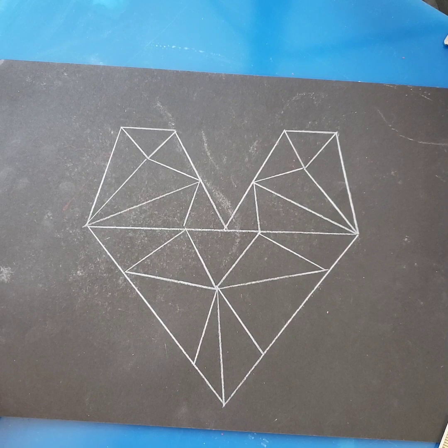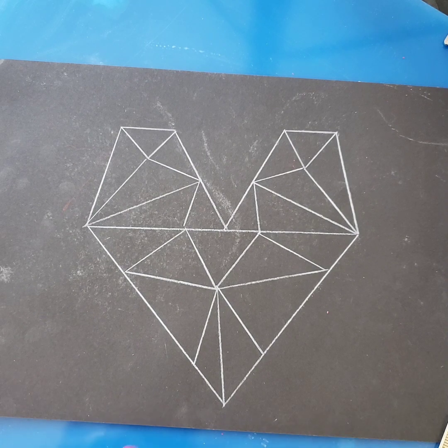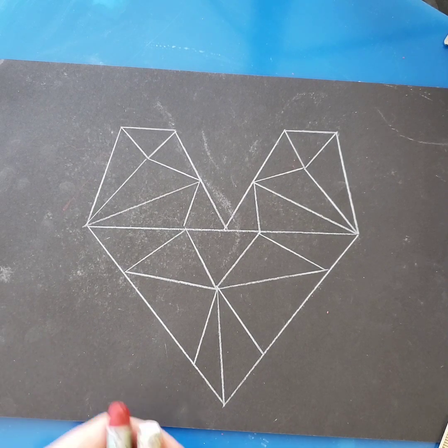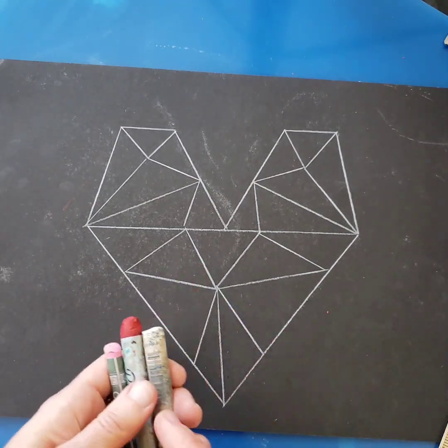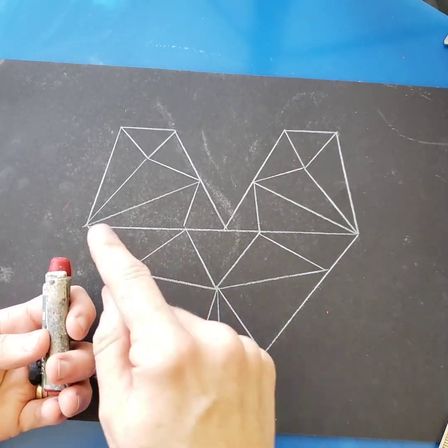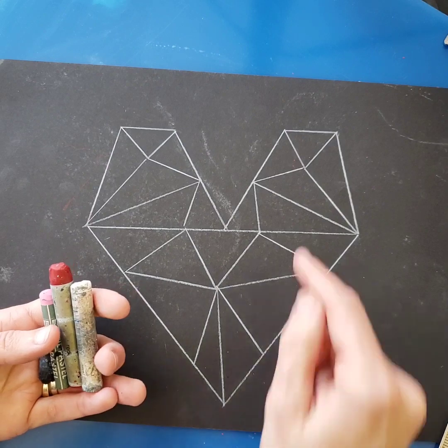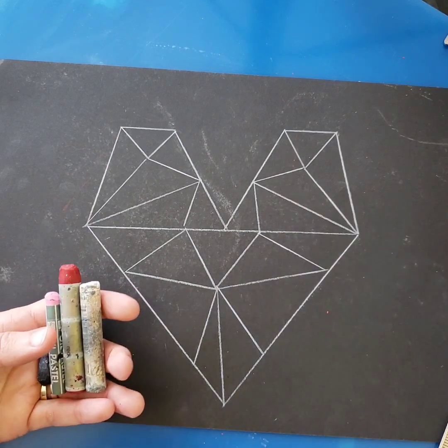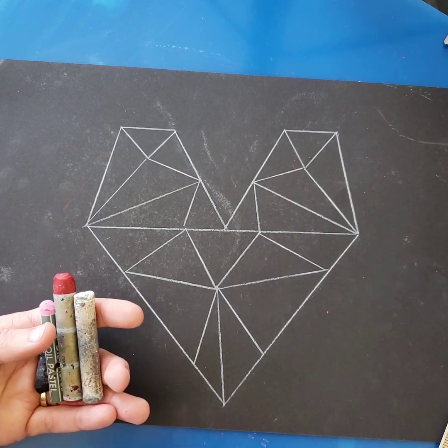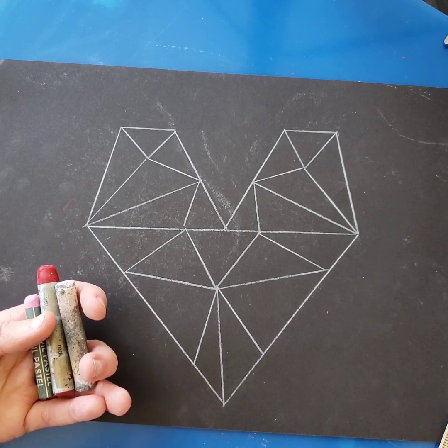The next thing I'm going to do is use my dark red, my pink, and my white and black to create some various triangles of each of those colors. And that's going to give it the effect of being a gemstone.